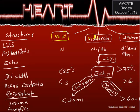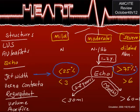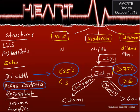The grading is divided into mild, moderate, and severe. Left ventricular systole and aortic valve leaflet: if normal, this is mild or moderate; if dilated, this is severe. Jet width: less than 25% is mild, more than 75% is severe. Vena contracta: less than 3 is mild, more than 6 is severe. Regurgitant volume: less than 30 mL is mild, more than 60 mL is severe.